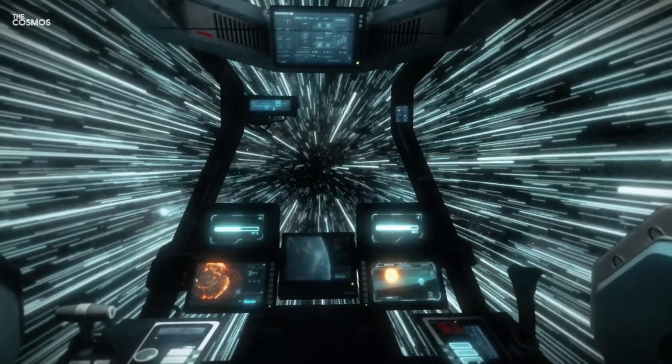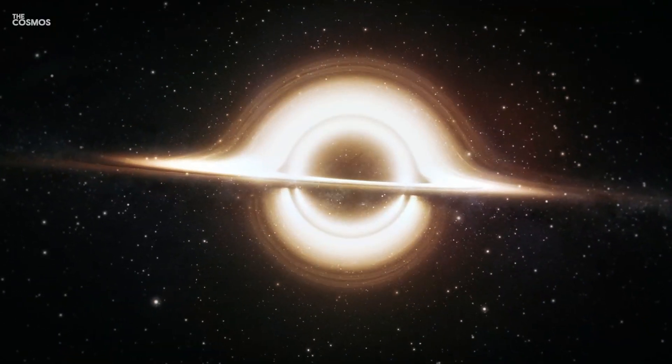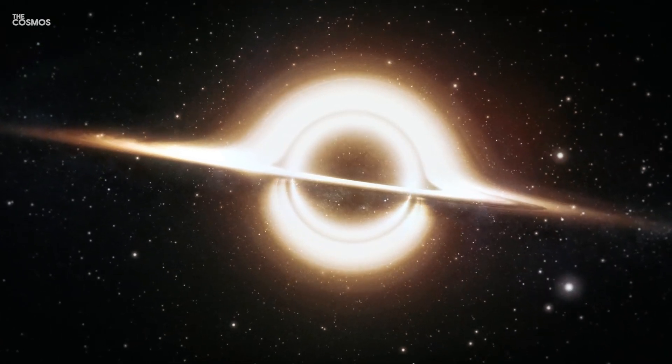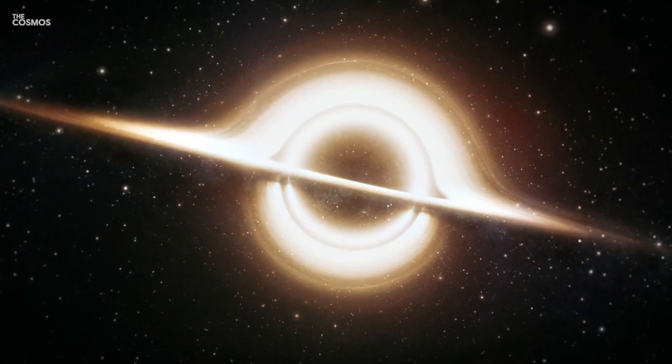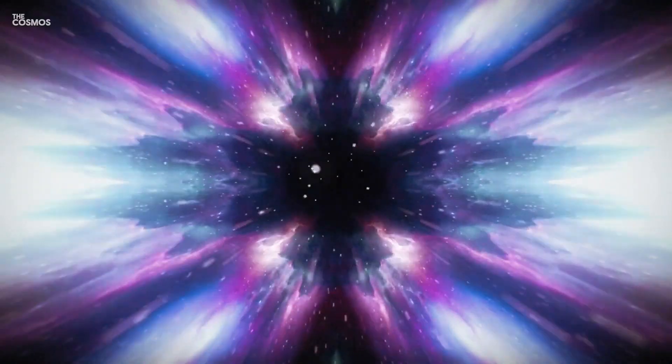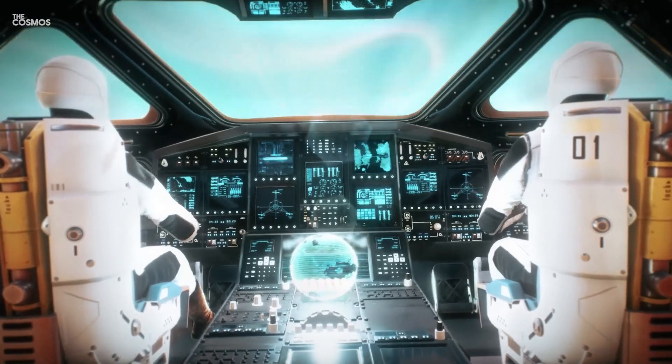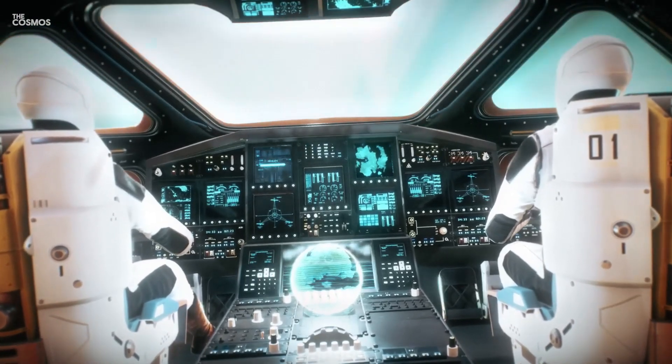This hypothetical phenomenon is called a closed time-like curve. If a spaceship could travel along this curve, it might be able to journey back to an earlier point in time. However, the conditions required for such a trip are far beyond our current technology and understanding, making this an exciting but purely theoretical possibility.